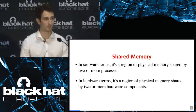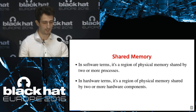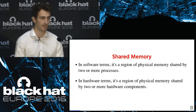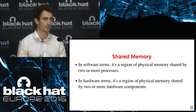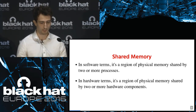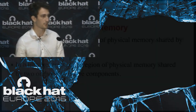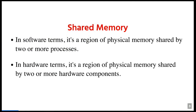So shared memory — what is it? If you talk to your software engineer, they're going to tell you it's a region of physical memory shared between two or more processes. A common example of this is dynamic libraries: instead of loading a dynamic library multiple times into memory, you load it once and share the memory between multiple processes. This cuts down on memory usage. Additionally, shared memory is used for inter-process communication, where you map the same memory page into both processes and read and write values — very quick with low overhead.